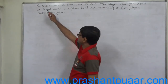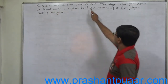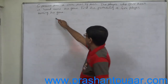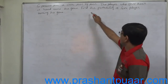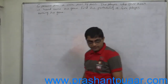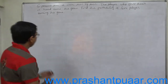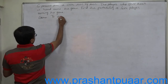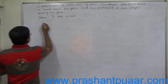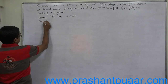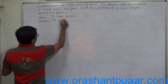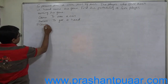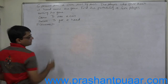The new problem: six persons toss a coin turn by turn. The player who first throws a head wins the game. Find the probability of the fourth player winning the game. What is the game? To toss a coin. What is the definition of success? To get a head. What is the probability of success?